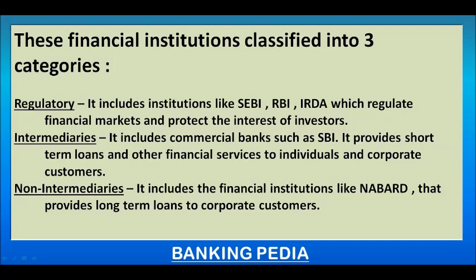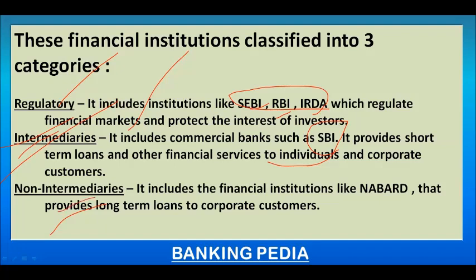Financial institutions are mainly divided into three categories: number one is regulatory, number two is intermediaries, and number three is non-intermediaries. Regulatory institutions include SEBI, RBI, and IRDA — these are government-controlled bodies. Intermediaries include SBI as an important example. Non-intermediaries like NABARD provide long-term loans to corporate customers.